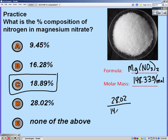Nitrogen, you have two of them, so that's 28.02 over 148.33 times 100.